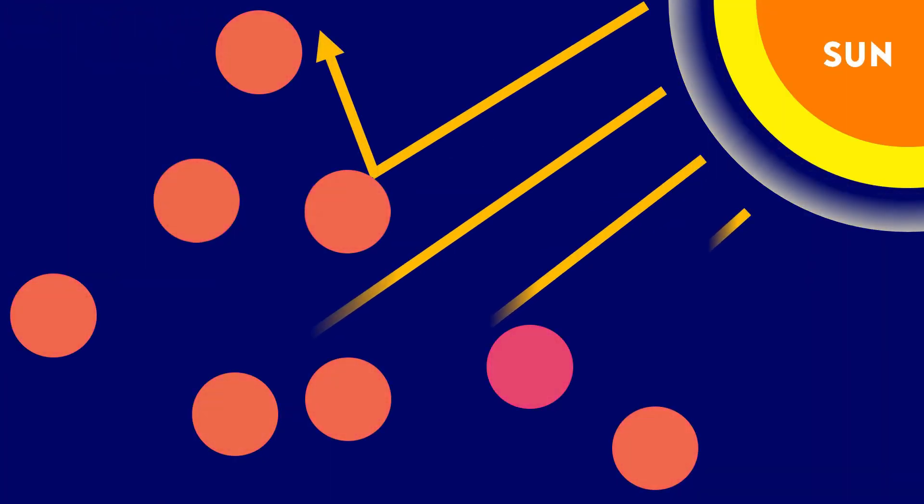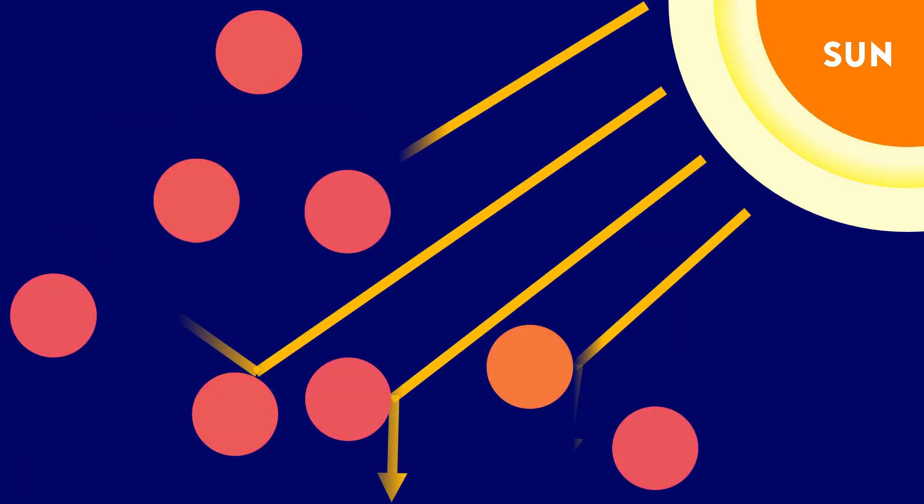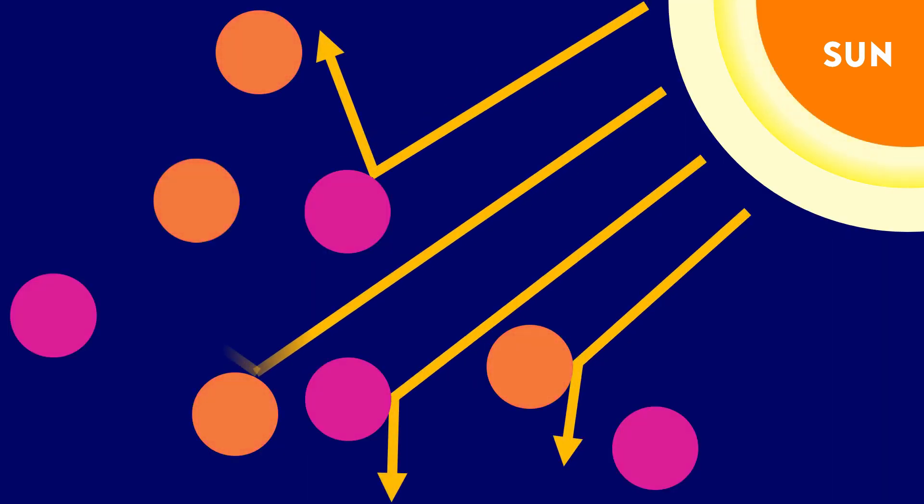The light rays are deflected from their original path in all directions by the fine particles. This phenomenon is called light scattering.